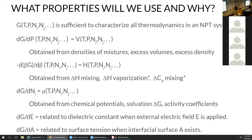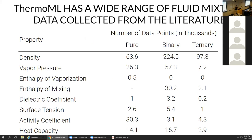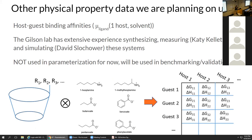Dielectric constants are related to the Gibbs free energy when an electrical field is applied, and the change with respect to interfacial area gives the surface tension. ThermoML has a wide range of fluid mixture data collected from literature — you can see the number of data points in thousands. There are about 30,000 enthalpies of mixing over a large number of compounds, plus binary heat capacity data — so there's a lot of data to probe.